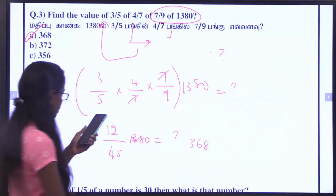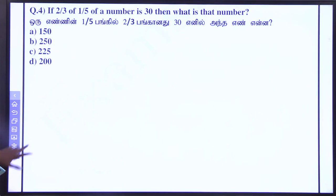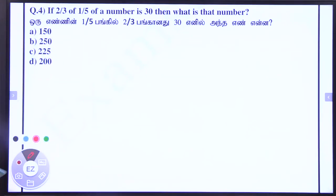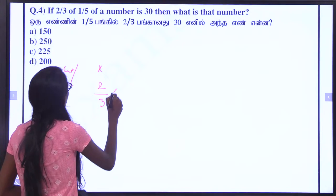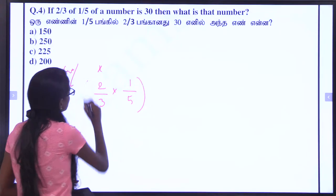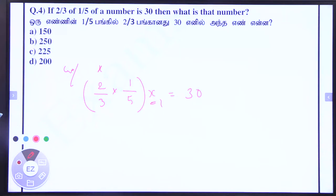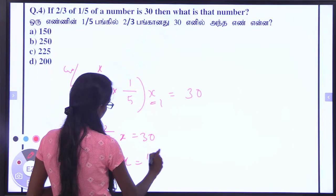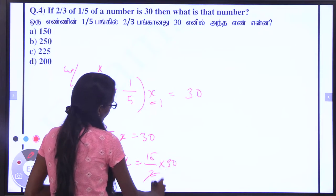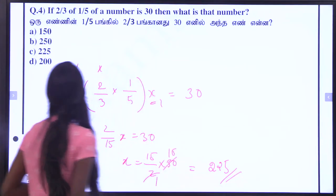Next question: if 2 by 3 of 1 by 5 of a number is 30, what is the number? Let x be the number. So 2/3 into 1/5 into x equals 30. Solving: 15 times — 15 multiplied gives 225. So the answer is option C.